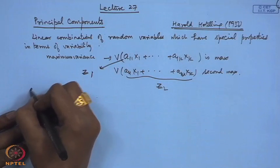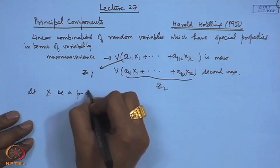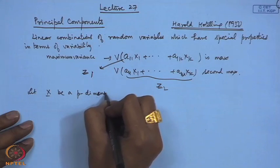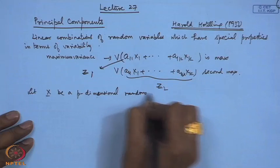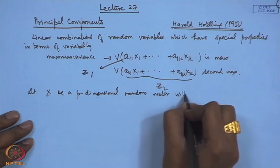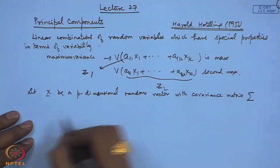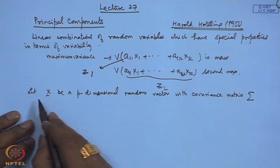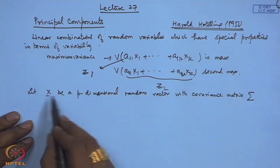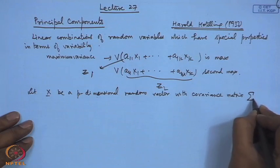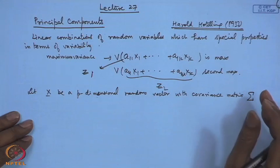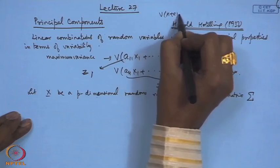We consider: let x be a p-dimensional random vector with covariance matrix σ. This may have a mean vector μ, but without loss of generality I can shift it to mean vector 0, because in the discussion of the variance-covariance matrix the mean does not play any role.